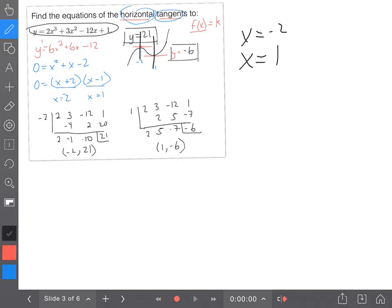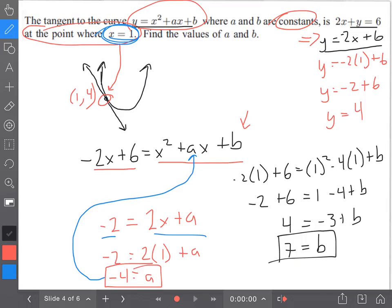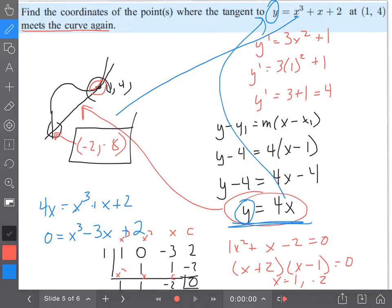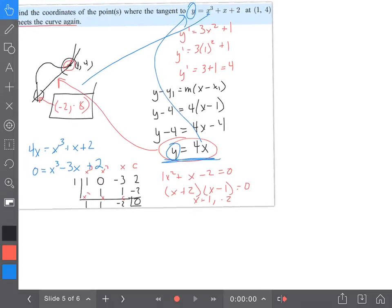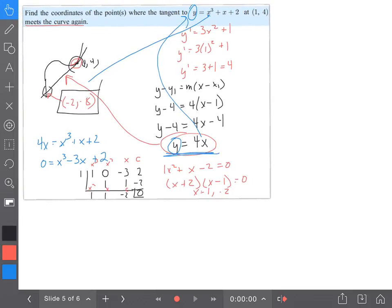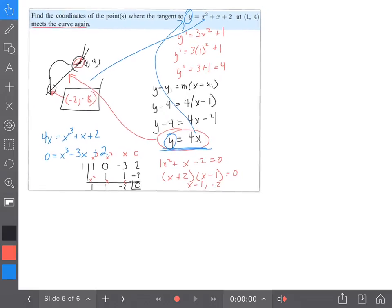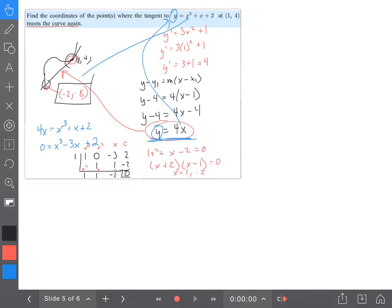You follow exactly the same process. We do exactly the same work because we're still finding the derivative. You haven't had enough yet, have you? All right, fine. Let's go to another one. So in this one we found the tangent to the curve. That one isn't going to work so well. Let's find a different question. How about this one: find the coordinates of the points where the tangent at (1,4) meets the curve again.